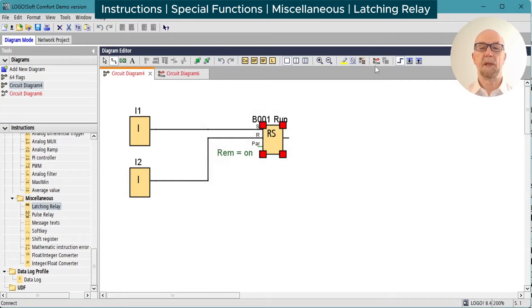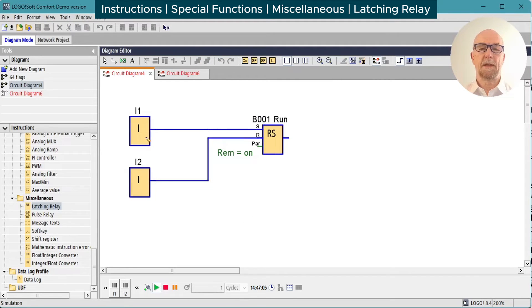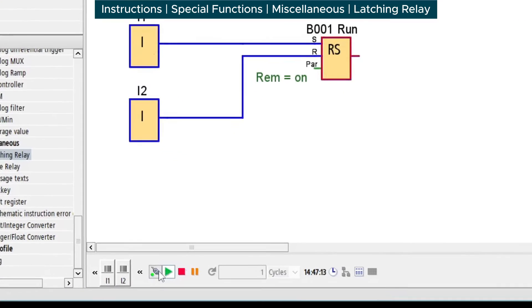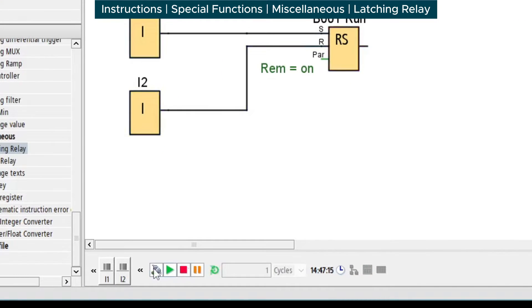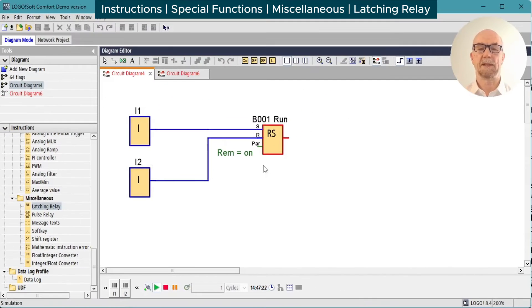Run the simulation. We'll give the set input a pulse. The latching relay turns on. Give the reset a pulse. The latching relay turns off. We'll turn it on again and interrupt the power. Everything goes black. Release the power reset and it has remembered its state because we have retentivity set on.